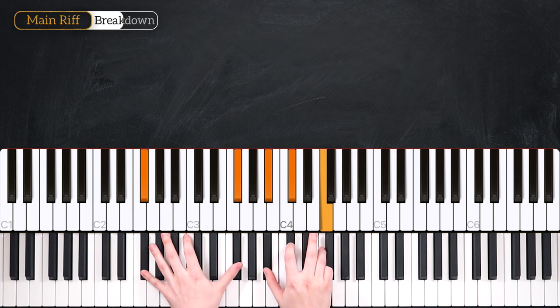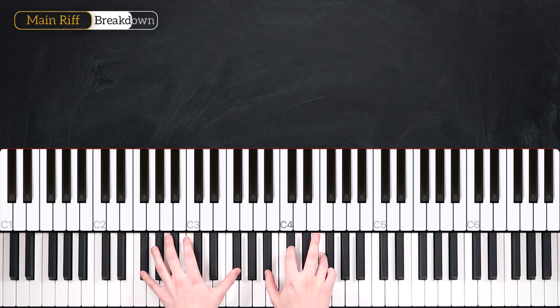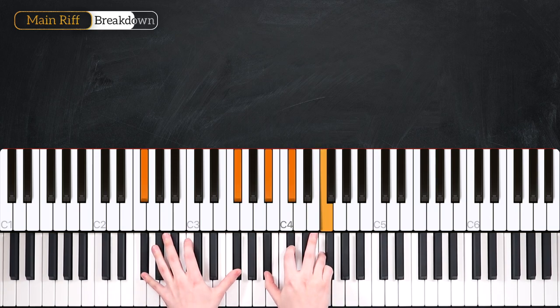In bars one and two we're playing our Gb major 7 chord. So again that's octave Gb in the left hand, Bb, Db and F in the right hand. We're playing in that rhythm of one and two and three and four and one and two and three and four and.